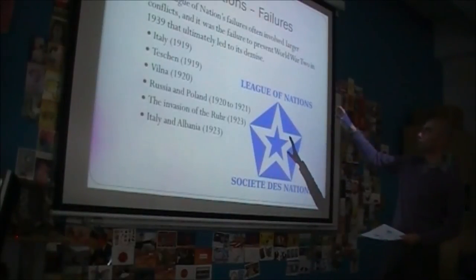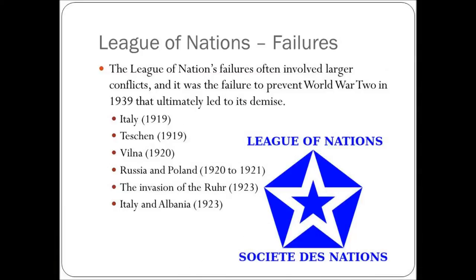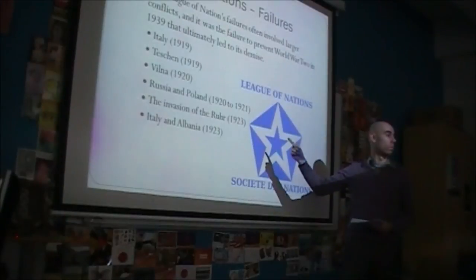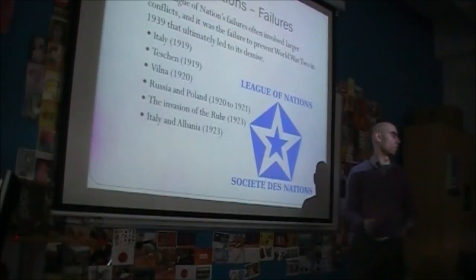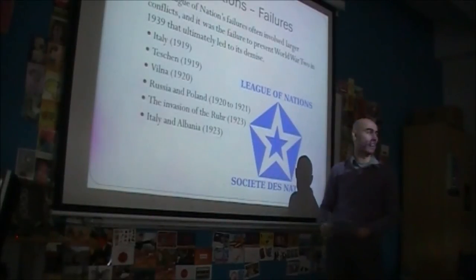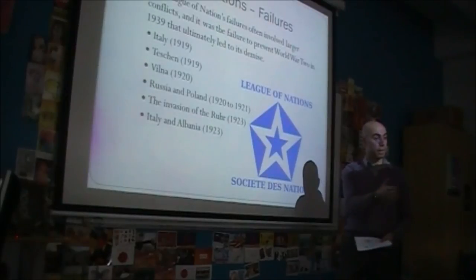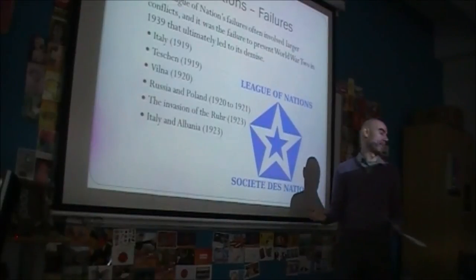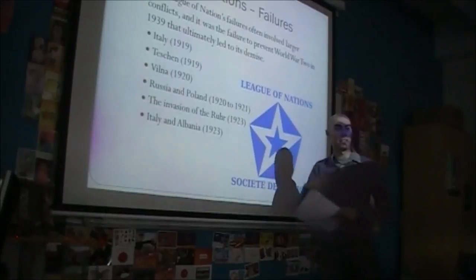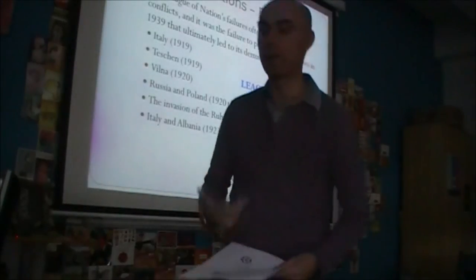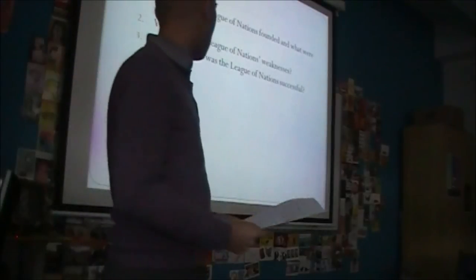The large conflicts the League failed to prevent included: Italy and Teschen, Russia and Poland, the invasion of the Ruhr in Germany, and Italy and Albania. These all involved large European powers — exactly the kind of conflicts the League was supposed to prevent. It managed to succeed only in small conflicts, while failing in the large ones. To assess the League of Nations: it had its successes, but they were small and minor. Its failures were large. Even its successes were limited, and this is what you need to understand about world order and why the League of Nations ultimately failed.